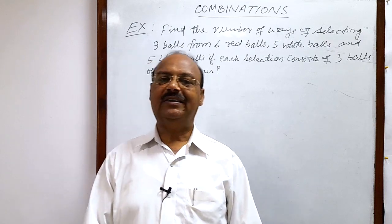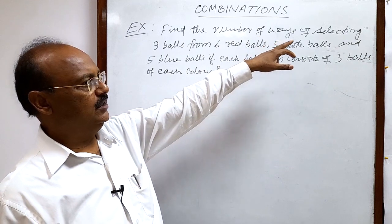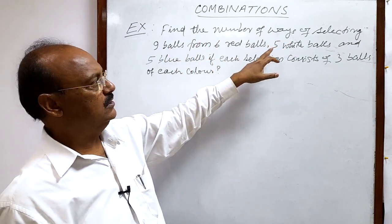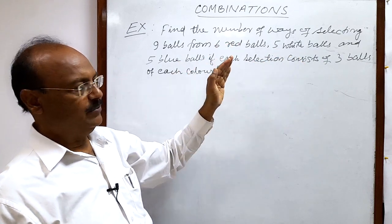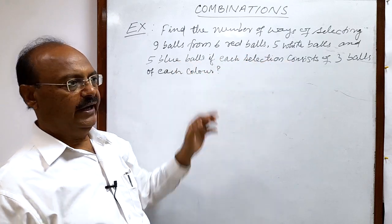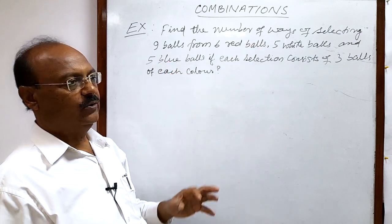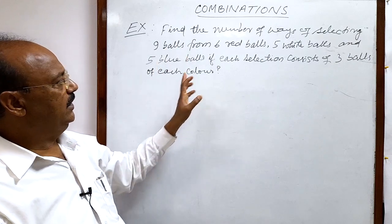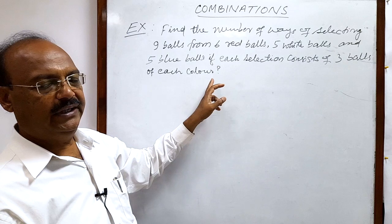Here we will see a question from the topic combinations. The question is: find the number of ways of selecting 9 balls from 6 red balls, 5 white balls, and 5 blue balls. So there are 3 types of balls — 6 red, 5 white, and 5 blue — making 16 balls total. Out of these 16 balls, we have to select 9 balls, with the condition that each selection consists of 3 balls of each color.